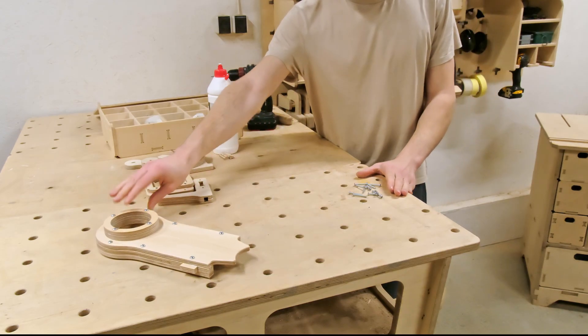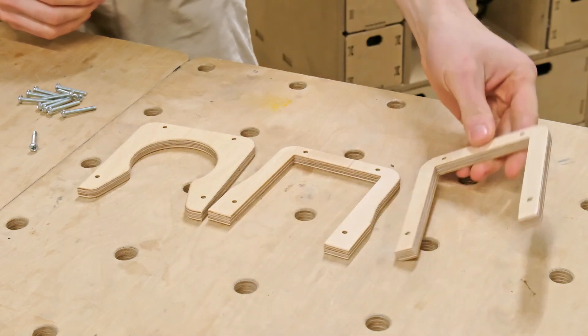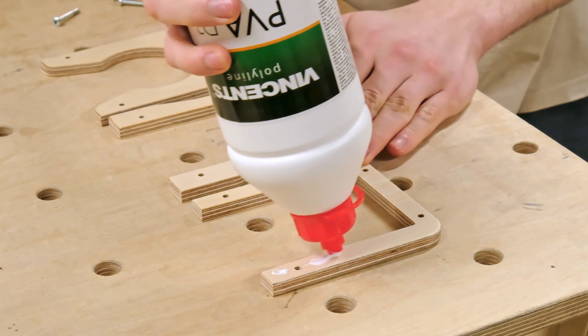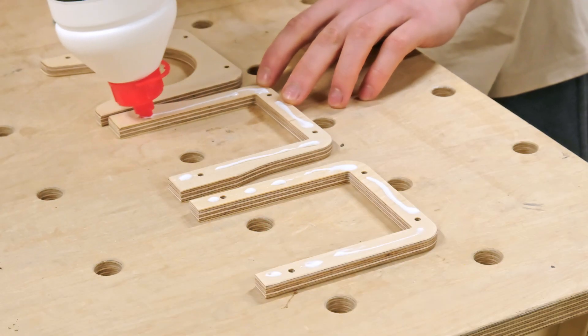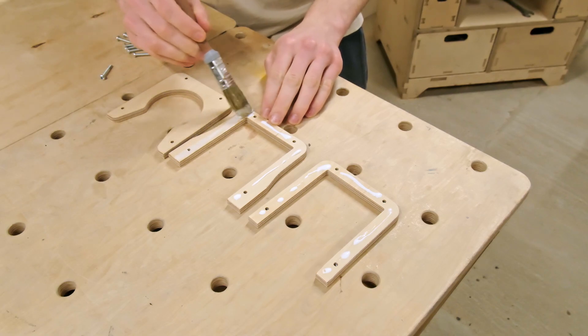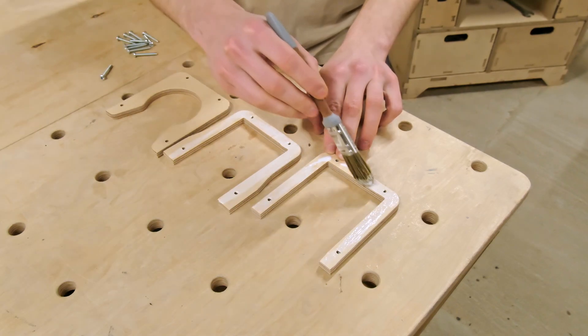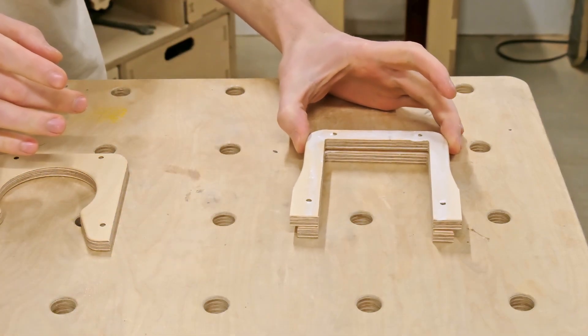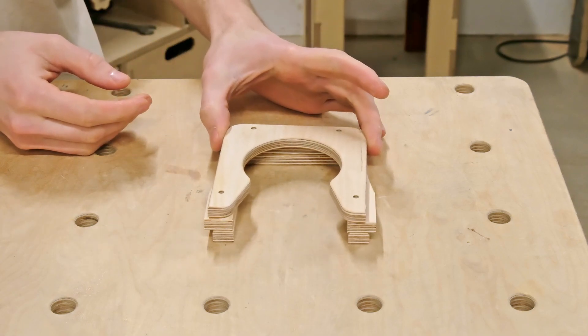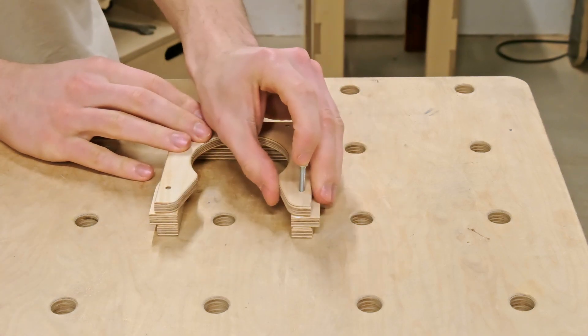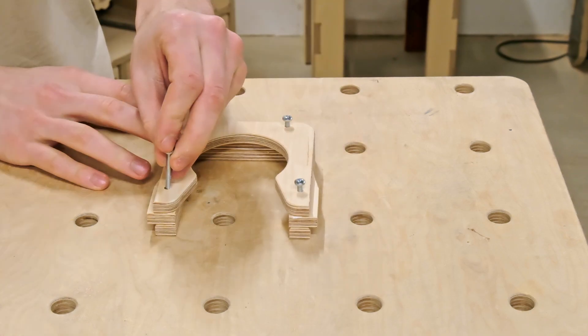Next, we have to glue together the parts for the detachable section of the dust tube. So again, we spread out the parts on the workbench, add a little bit of glue, spread it out nicely and stack the parts on top of each other. To secure them together, I'm adding the same M4 screws as we did earlier.